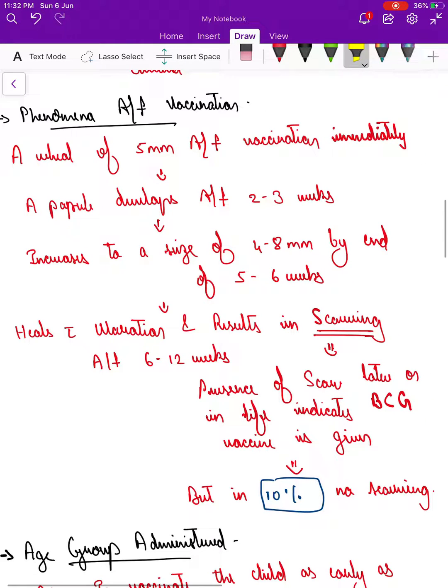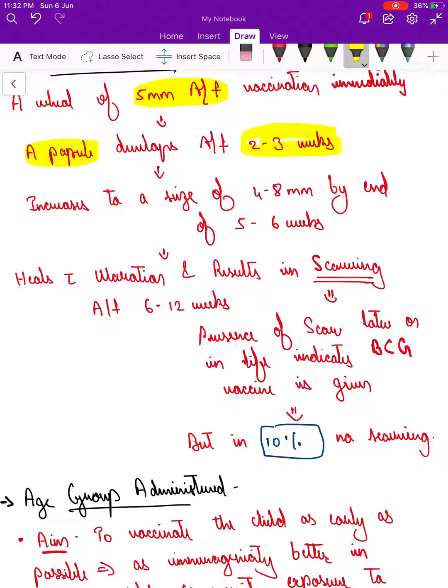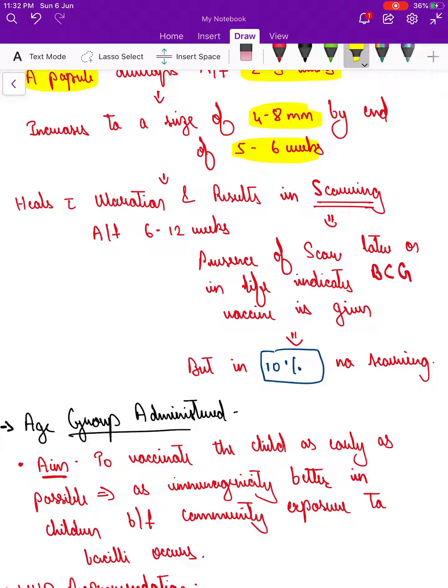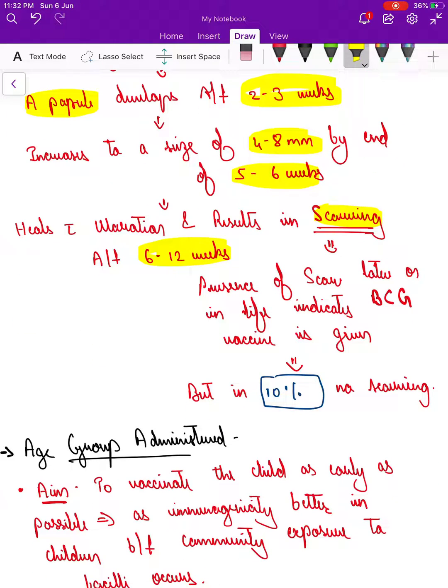What is the phenomenon after vaccination? Examiners are very fond of this question. Once we vaccinate, initially a 5 mm wheal is raised immediately. Then after 2 to 3 weeks, a papule develops. This papule increases in size up to 4 to 8 mm by the end of 5 to 6 weeks. After this, ulceration of that papule takes place, followed by healing, and this leaves a scar by 6 to 12 weeks.